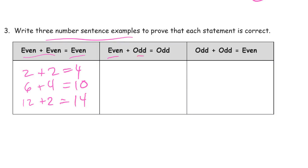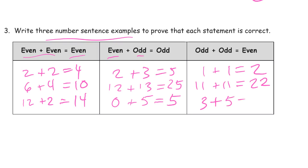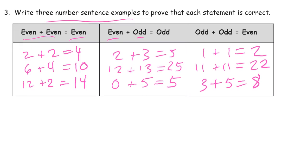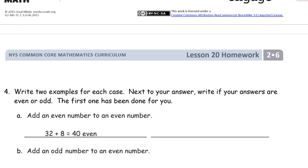Even plus odd. So two plus three equals five. And twelve plus thirteen equals twenty-five. And zero plus five equals five. Right? Because zero is an even number. Odd. One plus one equals two. And how about eleven plus eleven equals twenty-two. And three plus five equals eight. So hopefully that just gives you an idea of what they're looking for. And maybe you come up with your own examples. I hope you do.